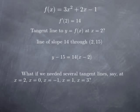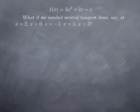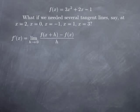What if instead we needed several tangent lines — for instance at x equal to 2, but also at x equal to 0, x equal to negative 1, x equal to 1, and x equal to 3? We don't want to repeat the same calculation over and over again. So in that case we're going to calculate f prime of x as a function of x, and once we have this function we will plug in the various values of x that we need. By definition, f prime is the limit as h approaches 0 of f of x plus h minus f of x, divided by h.